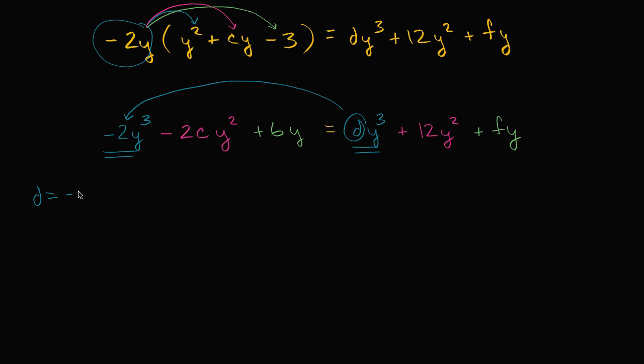So let's write that down. D is equal to negative two. We could see the second degree term. This second degree term matches up to this second degree term right over there. So that tells us that this coefficient, the 12, must be equal to the negative two c. So let's write that down. Negative two c is equal to 12.